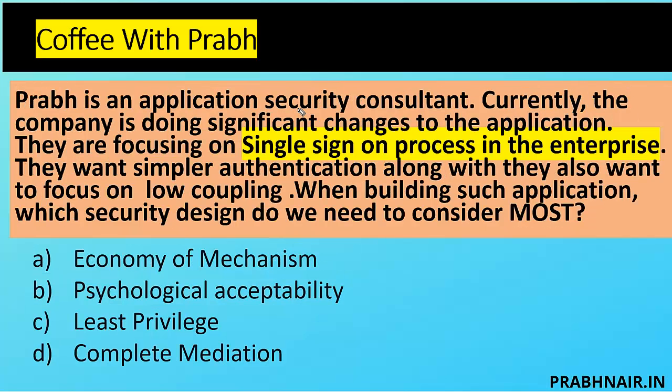Prabh is an application security consultant. Currently the company is making significant changes to the application. They are focusing on a single sign-on process in the enterprise. Why did Gmail introduce single sign-on? You log in once and can access any number of resources. In India, the Co-WIN platform is another example — you enter an OTP and directly access the interface. So the question is: they are focusing on single sign-on and want a simpler authentication along with low coupling.